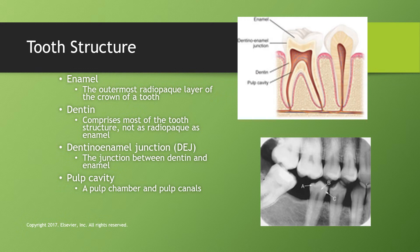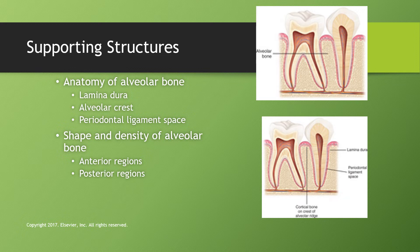Moving to tooth structure: the enamel is the outermost radiopaque layer of the crown of the tooth. Inside that is the dentin, and where the dentin meets the enamel is the dentinoenamel junction (DEJ). Inside that is the pulp cavity or pulp chamber, where the pulp — the nerve, blood vessels, and living tissue — resides. Around the teeth there is the cementum layer, then the PDL (periodontal ligament), which is a radiolucent line surrounding the tooth, and on the outside of that is the lamina dura — literally 'hard layer' — which completely surrounds the alveoli.